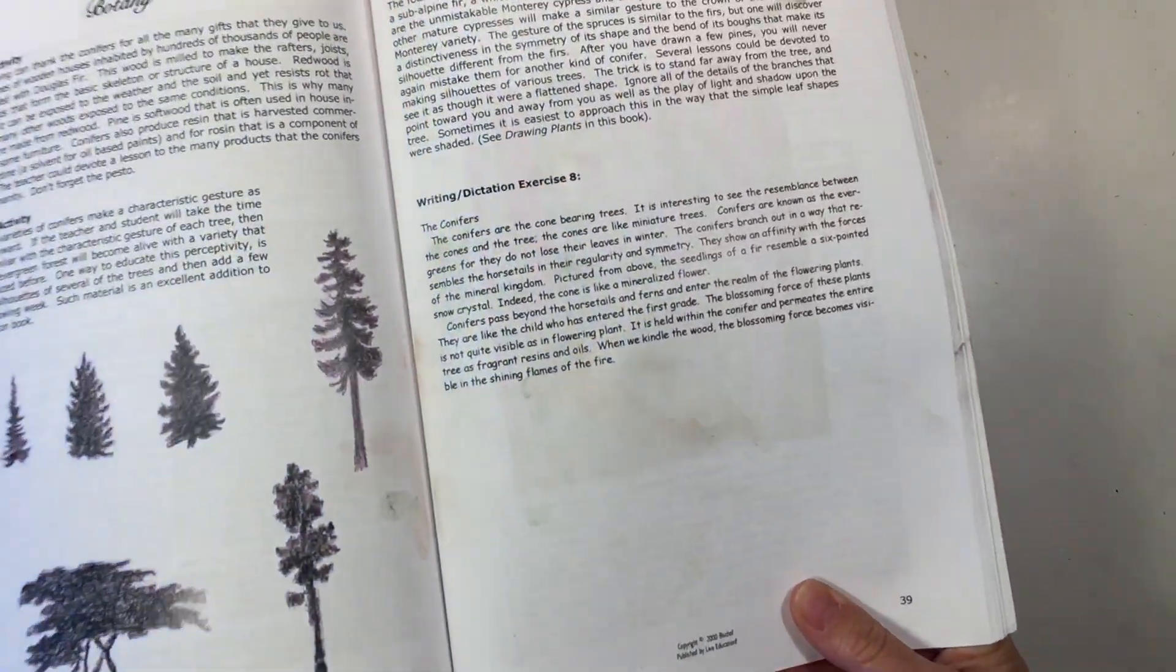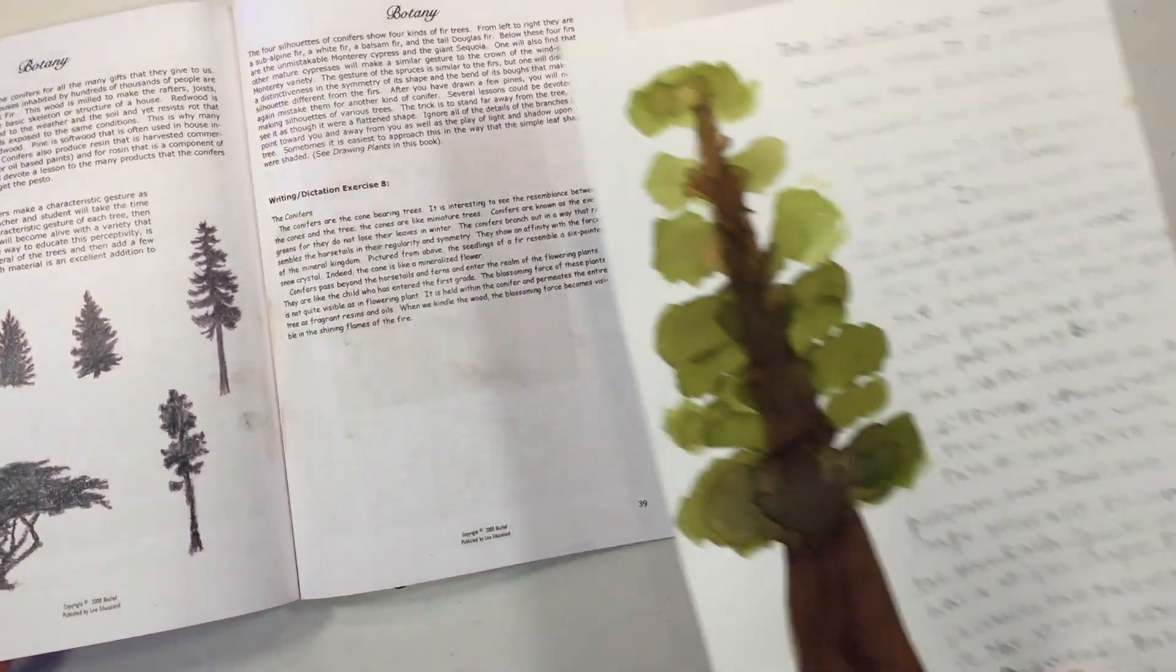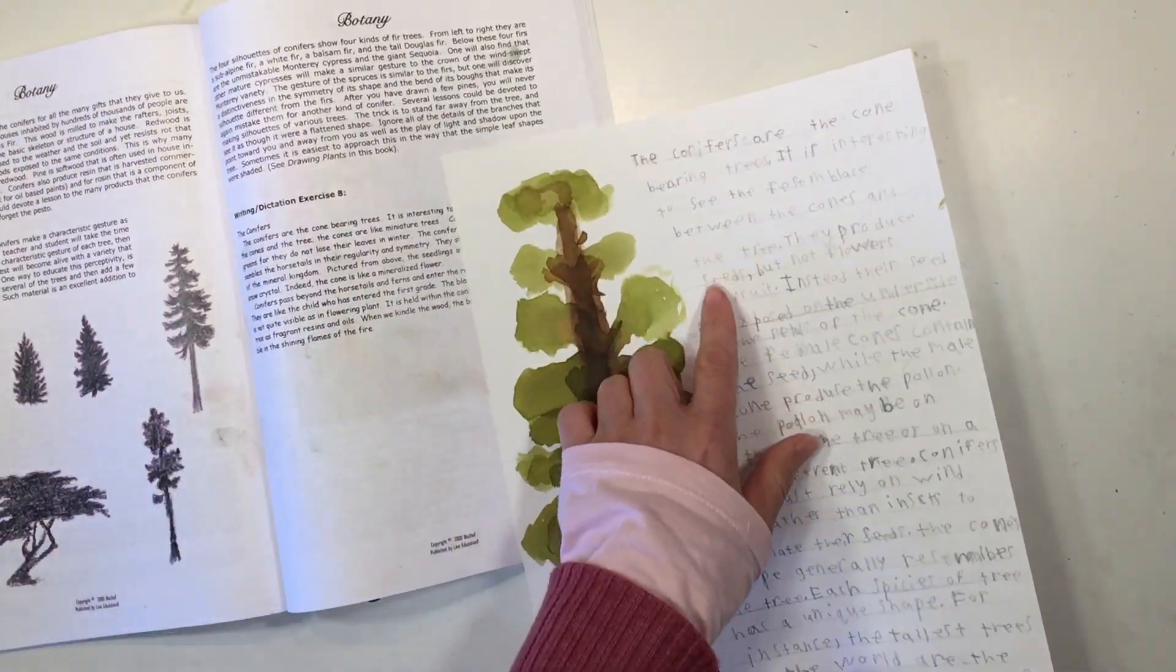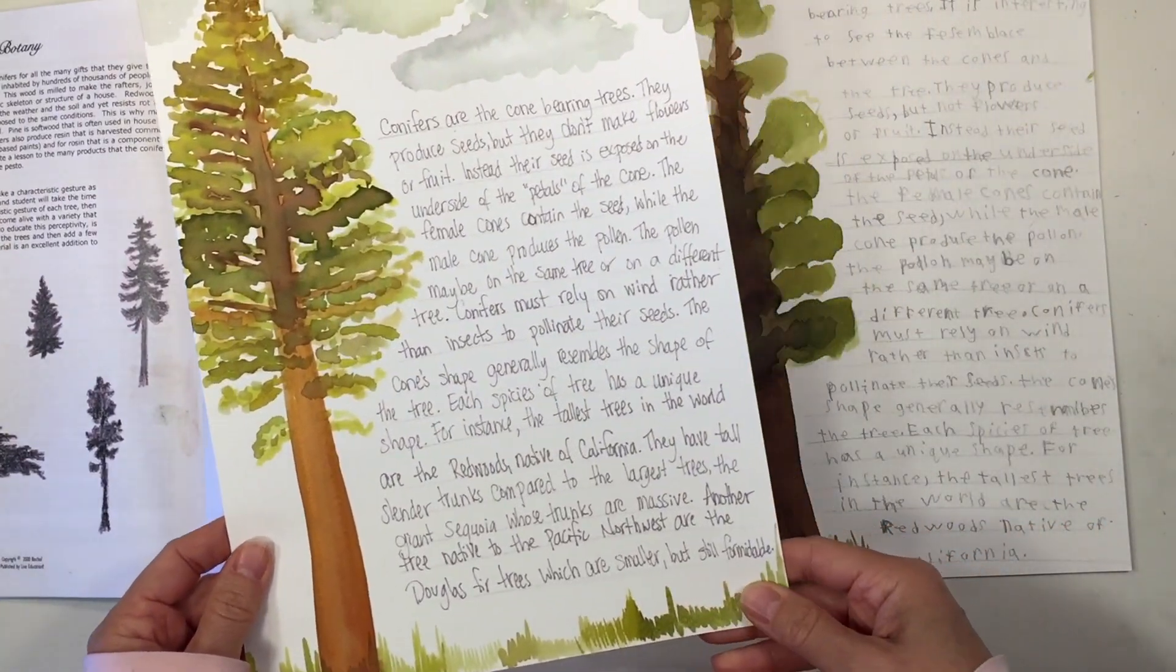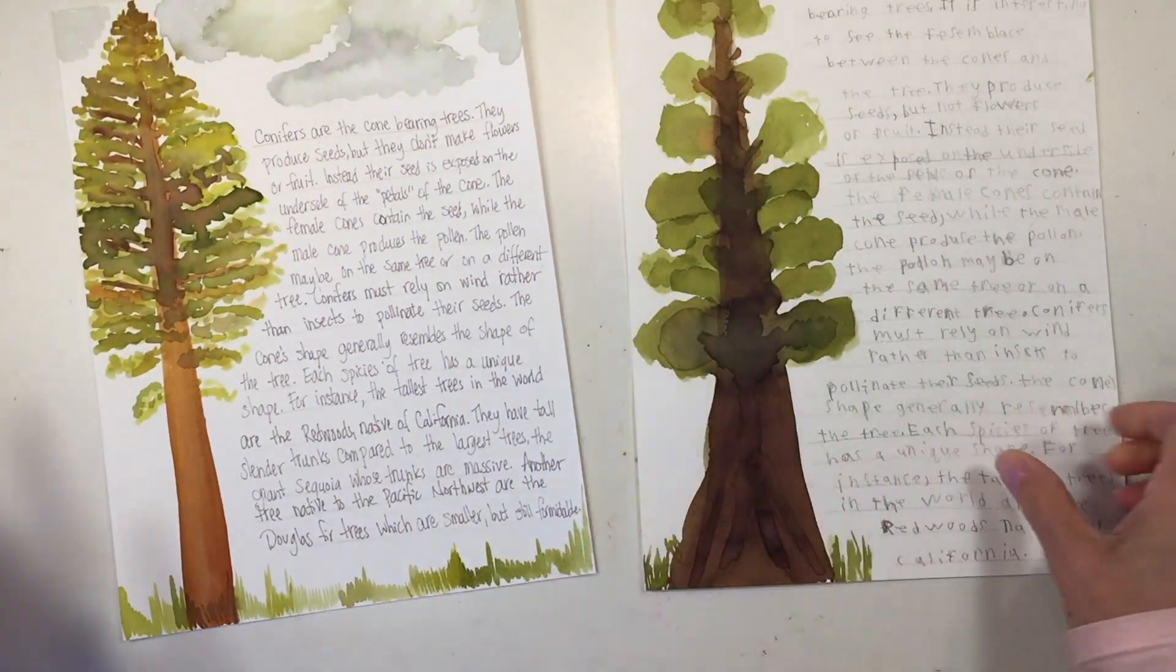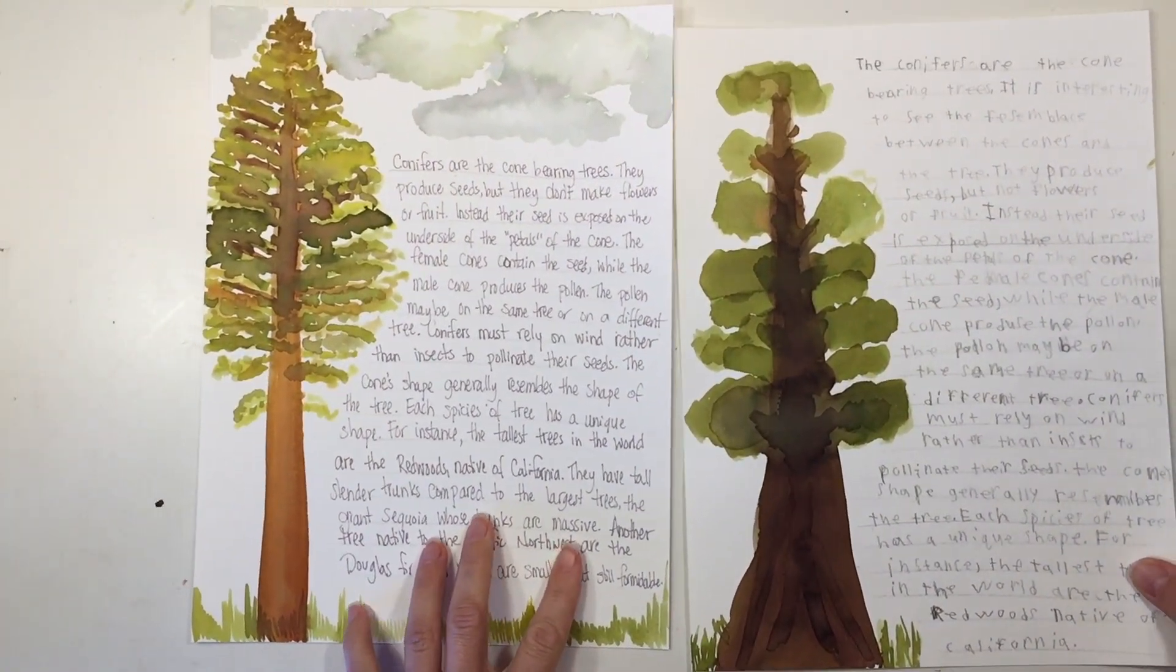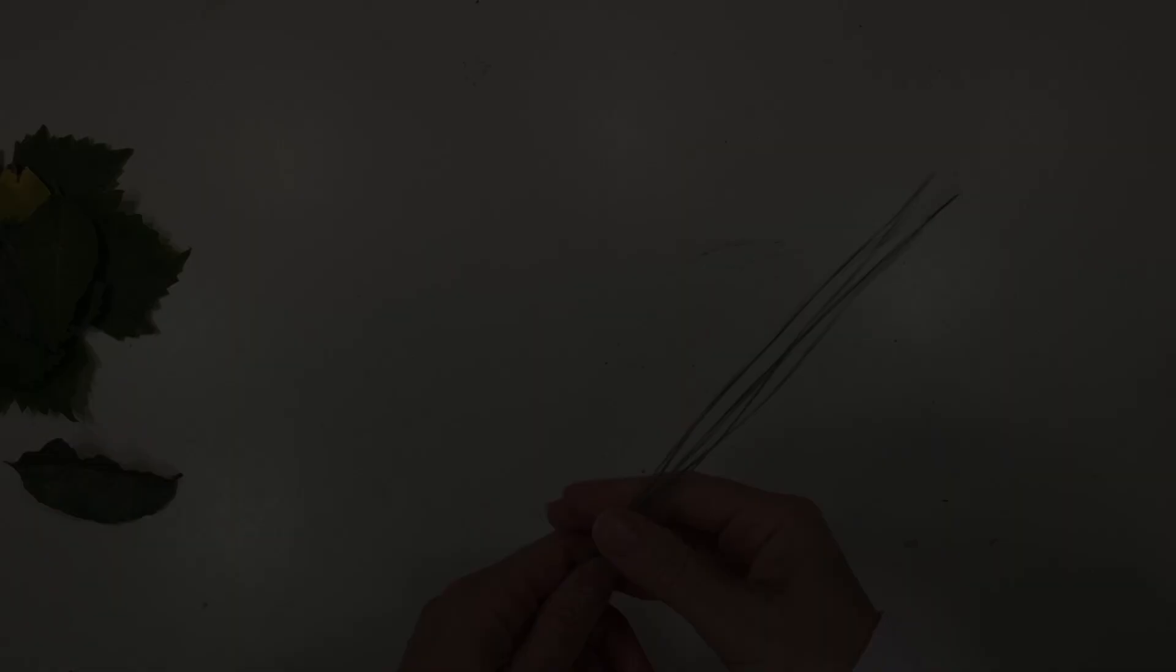Before we get to our narration, I want to show you what we did with our other set of watercolors. This is the one where we drew all three on one page and we went ahead and labeled that one. The book comes with a suggested narration that you can do. I had my son copying the book initially, but then I didn't really care for the narration provided. So I ended up writing my own.